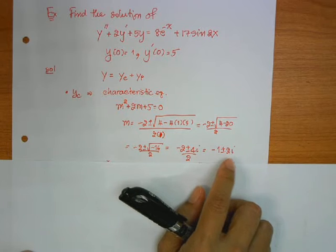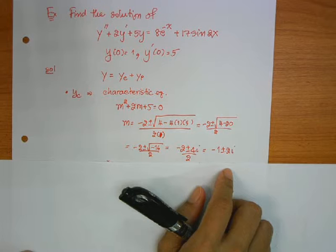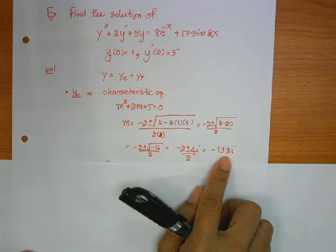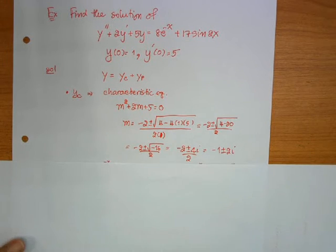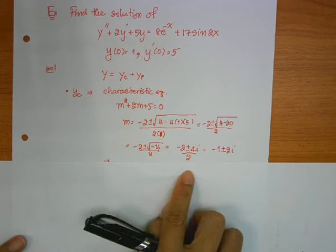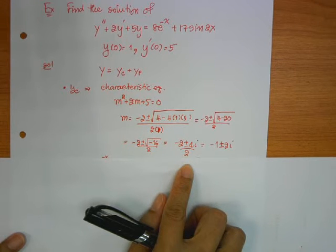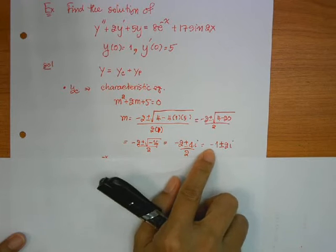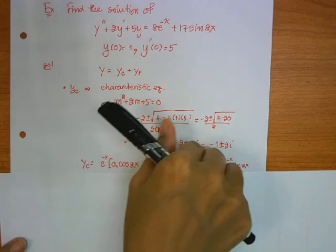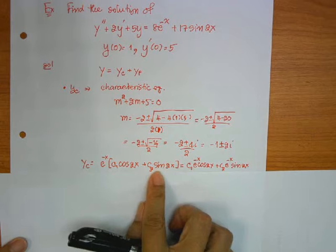The root of m is a complex conjugate pair — this is Case 3. So what is your yc? It is exponential of minus x, times c1 cosine 2x plus c2 sine 2x.